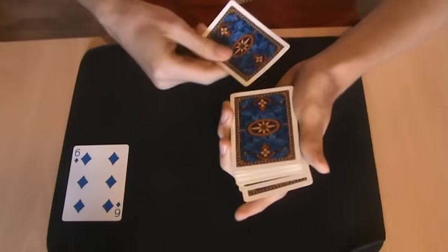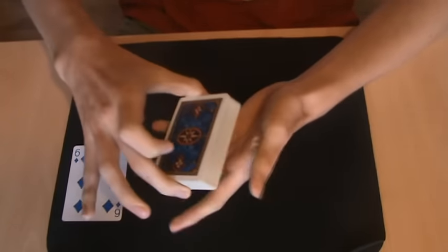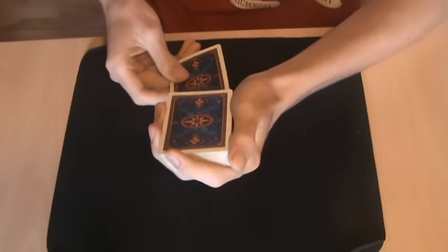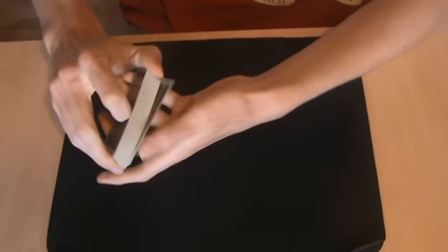Let's take the Eight first and let's just leave it somewhere in the middle of the deck. Completely lost. And the Six is also going to go somewhere in the middle of the deck, just like that. Completely lost again.